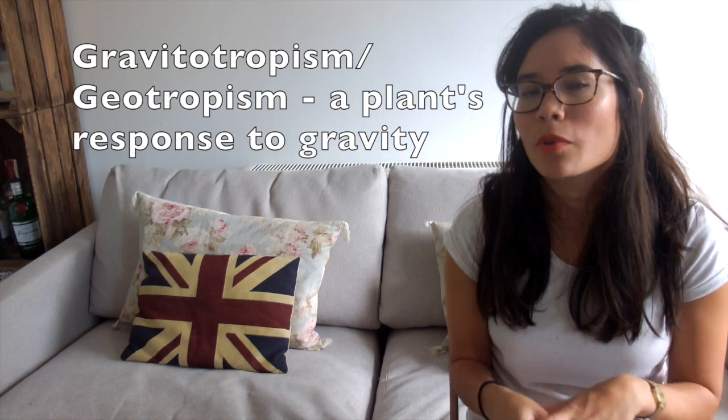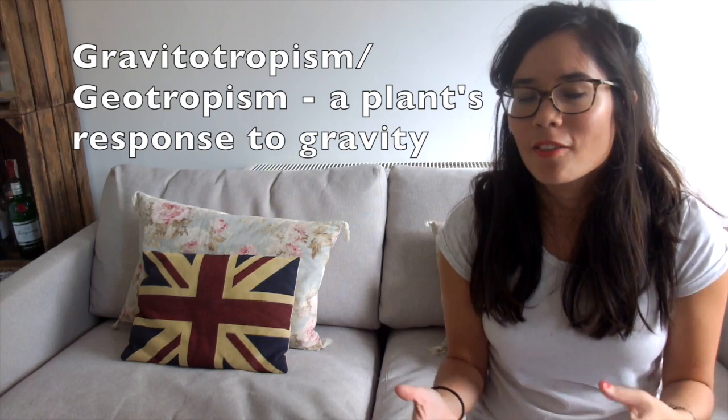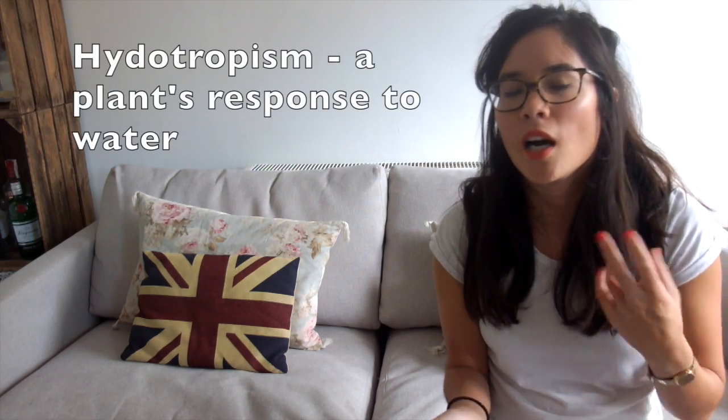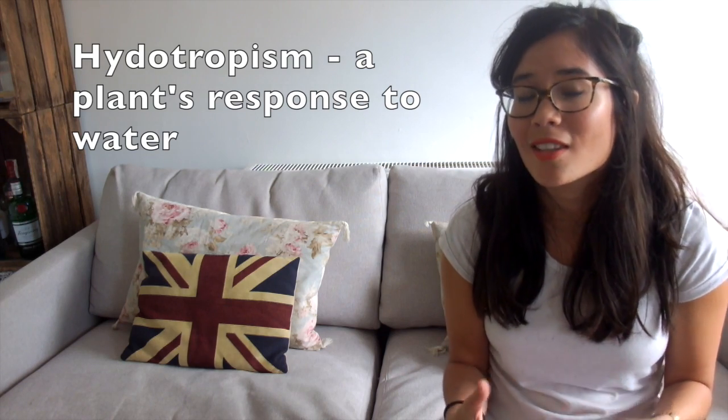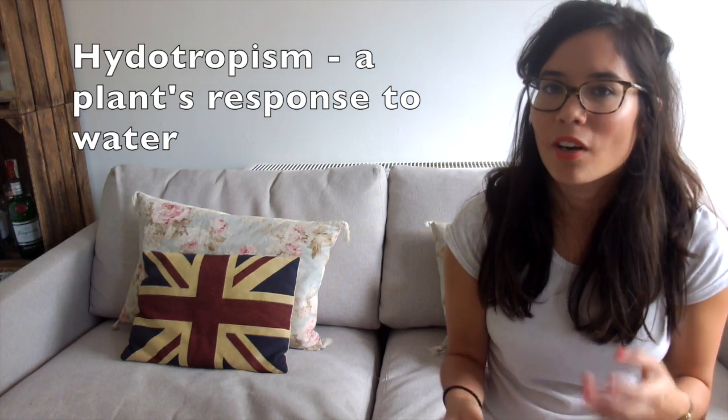A second type of tropism you need to know about is called gravitropism or geotropism — those are two names for the same thing. As the name suggests, that's a plant's response to gravity. So roots will have a positive geotropism, whereas shoots will show a negative one. And then finally, the less well-known one is hydrotropism — hydro meaning to do with water. Some roots will demonstrate positive hydrotropism, whereas shoots will display negative. This really does vary between plants, so some will just not really be affected by either gravity or light, but on the whole, that's the overview you need to know about.